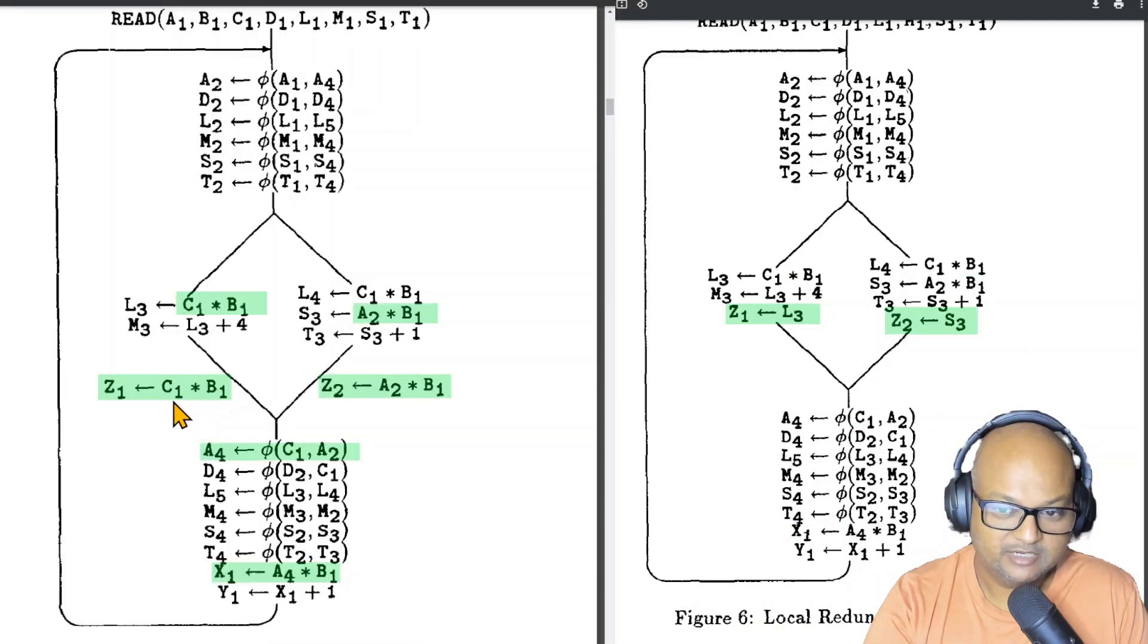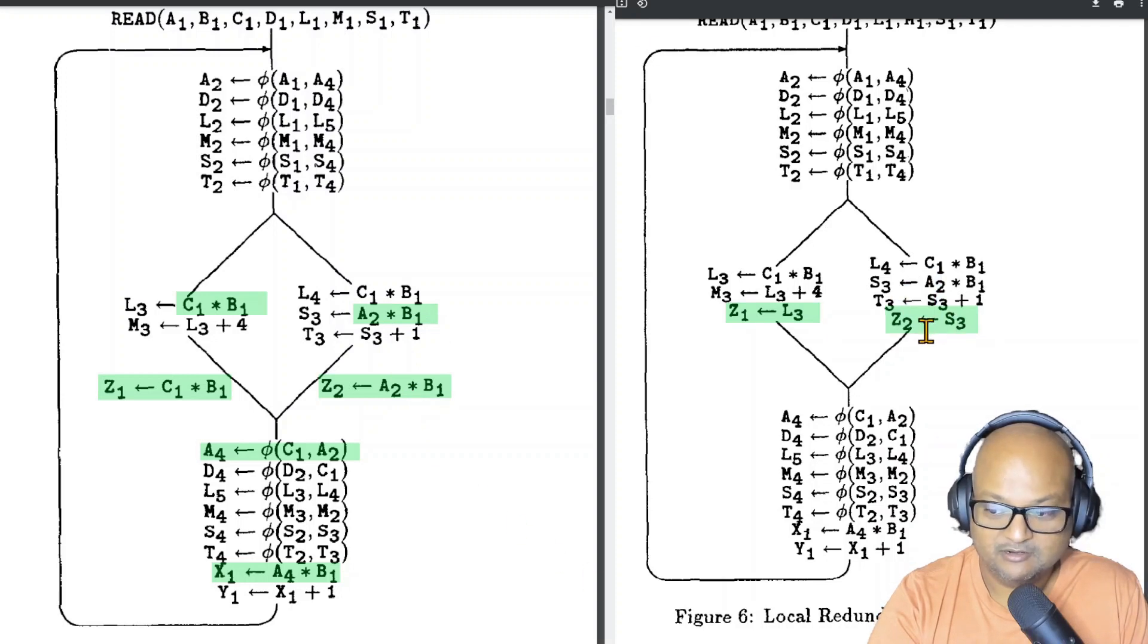Notice that a4 here is the result of a phi statement between c1 and a2. So when we go up the left branch instead of a4 we will use c1 and when we go up the right branch instead of a4 we will use a2. And now as soon as we do this we will notice that there are two computations with identical operands and operations.